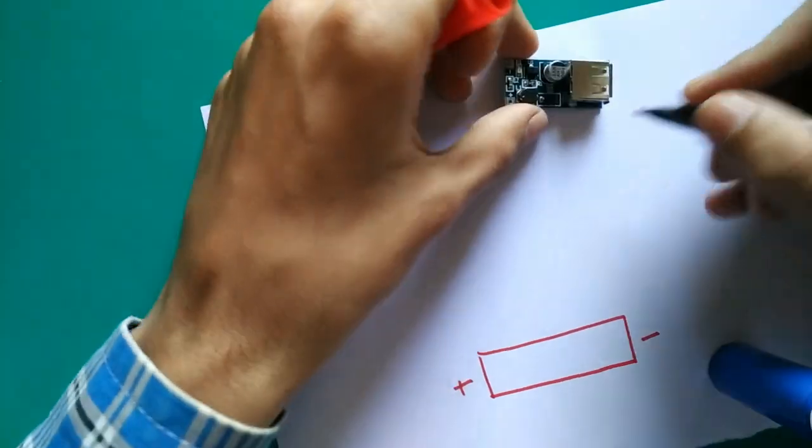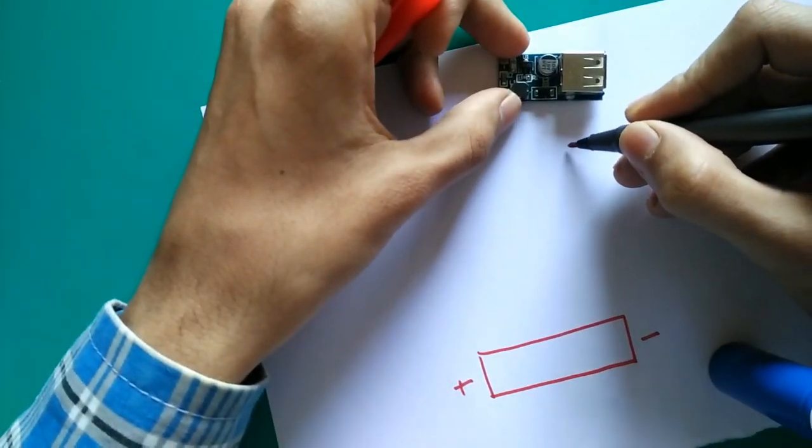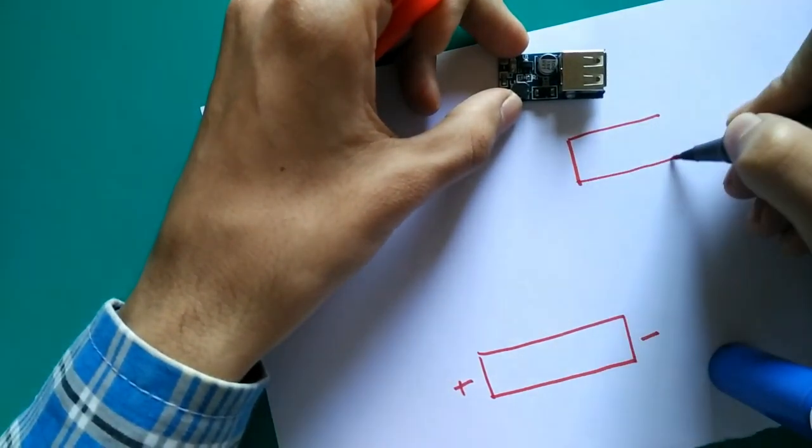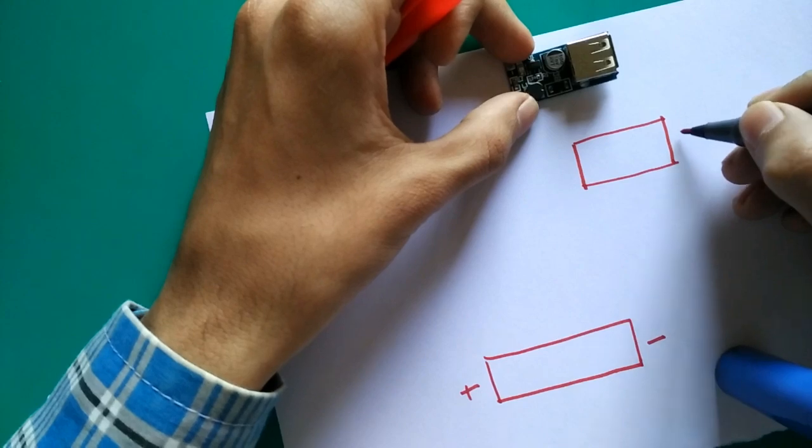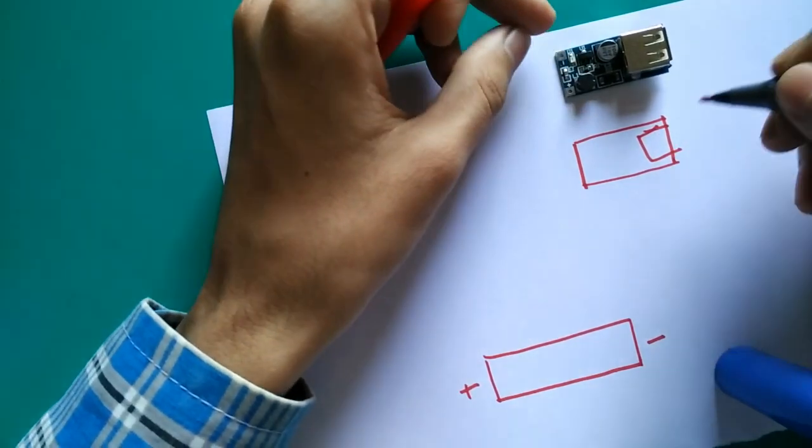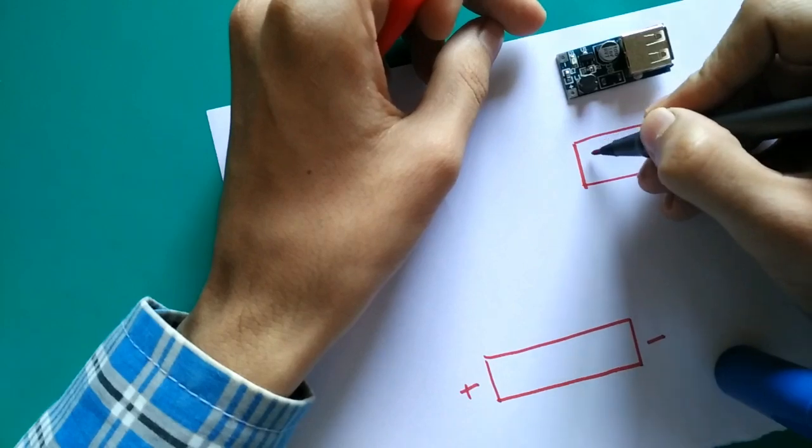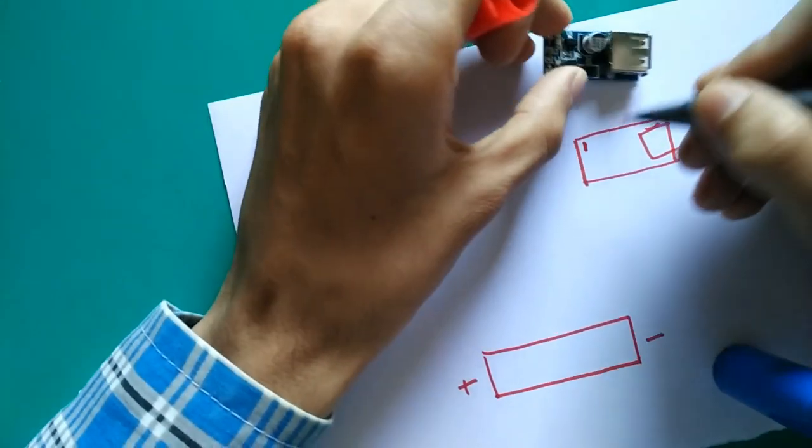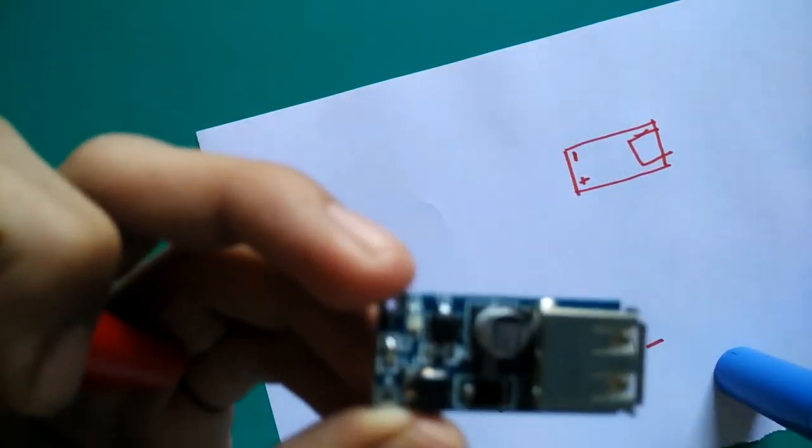This is our charging module. Now let's place it here. Here we can charge our mobile. Here there is negative terminal shown. This is positive terminal shown. You can see it.